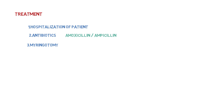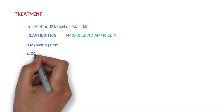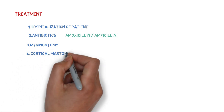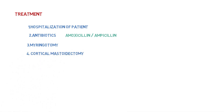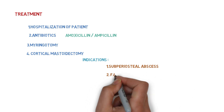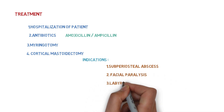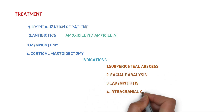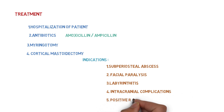If conservative treatment does not resolve the condition, we move toward cortical mastoidectomy. It is indicated when there is a sub-periosteal abscess, mastoiditis leading to complications like facial paralysis, labyrinthitis, intracranial complications, or a positive reservoir sign — that is, the meatus immediately fills with pus after it has been mopped out.